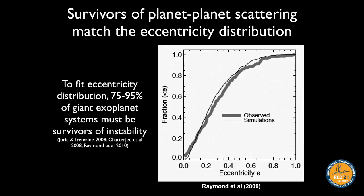This mechanism fits nicely within the general conceptual picture of multiple interacting planets, and it also matches the eccentricity distribution very easily. A simple set of simulations without any tweaking matches the observed distribution immediately. The one requirement is that most systems must go unstable — for this model to match the observed eccentricity distribution, at least three-quarters, maybe 90–95%, of all giant planet systems must be survivors of instability.